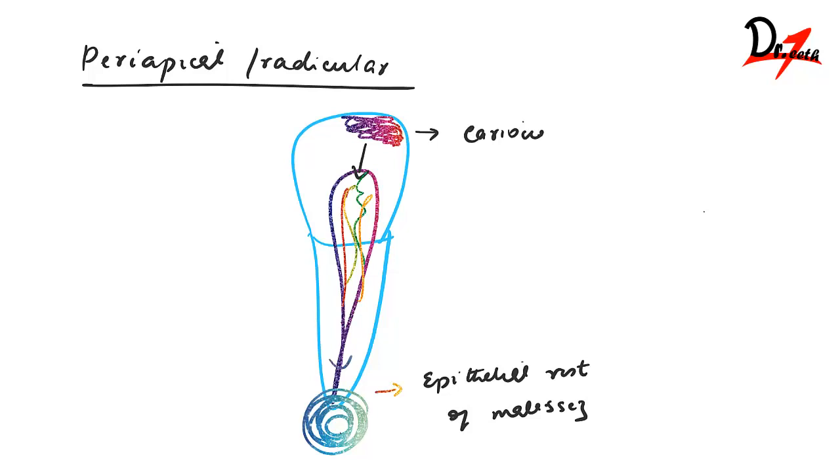There will be formation of this granuloma. These epithelial rest of Malassez have a very important feature—they can differentiate into any type of epithelium, which means they are pluripotent. These cells play a central role in the formation of radicular cyst. This granuloma is a rich vascular area, so we have a lot of blood vessels and immune cells like lymphocytes, macrophages, and plasma cells.